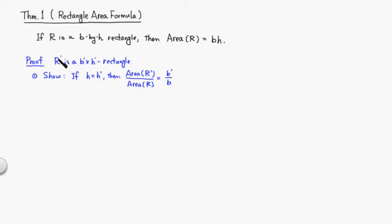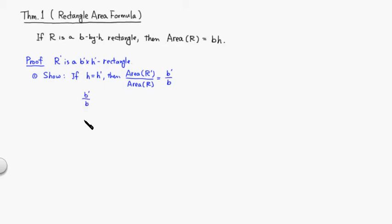In order to prove this result, let's say you have another rectangle R' which is b' by h. If the heights are the same — h equals h' — then the ratio of the areas between these two rectangles is the same as the ratio between the lengths of the base. Let's assume that b' is larger than or equal to b; if that's not the case we can always switch R' and R.